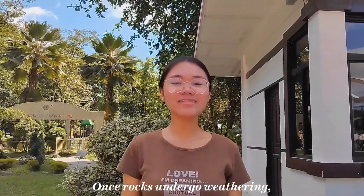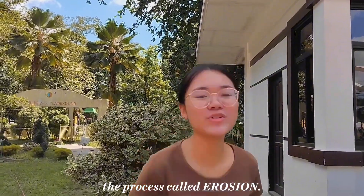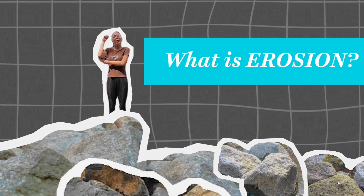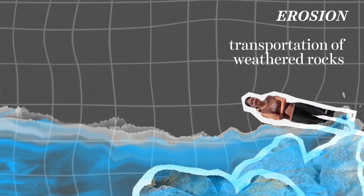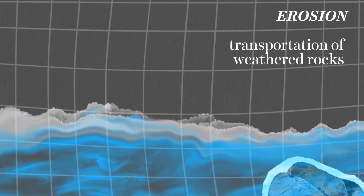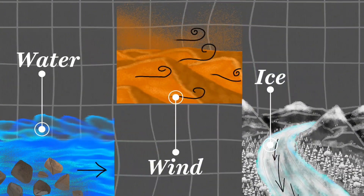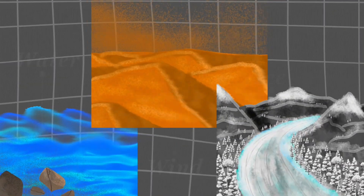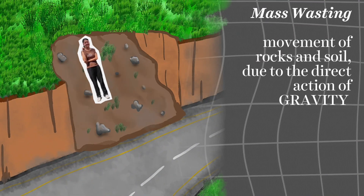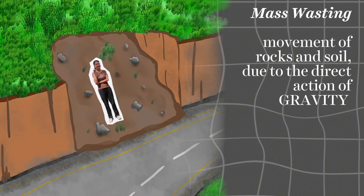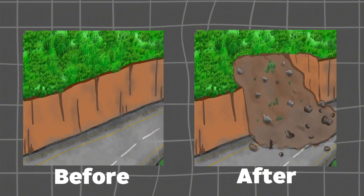Once rocks undergo weathering, the products are carried away by the process called erosion. Erosion is the transportation of weathered materials by natural agents such as water, wind, and ice. Aside from these agents, the influence of gravity causes mass wasting, which refers to the movement of rocks and soil downslope due to the direct action of gravity.